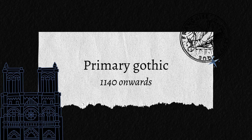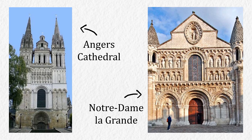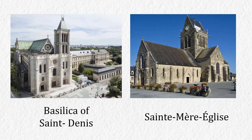Primary Gothic is basically the starting point of Gothic architecture style. Most of the Gothic architecture in this era still has many elements from the Romanesque. They are not very tall because many of them were rebuilds or redecorations of Romanesque buildings. Examples of buildings considered as Primary Gothic are the Basilica of Saint-Denis and Saint-Mère-Église in France.